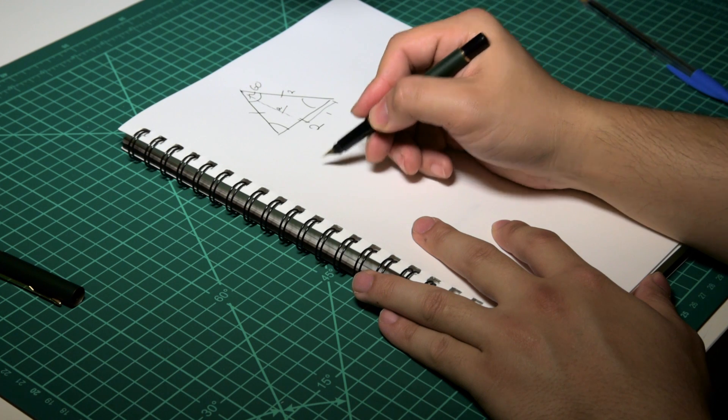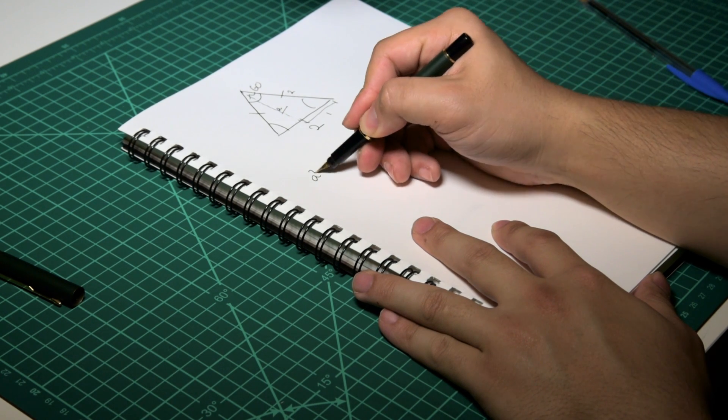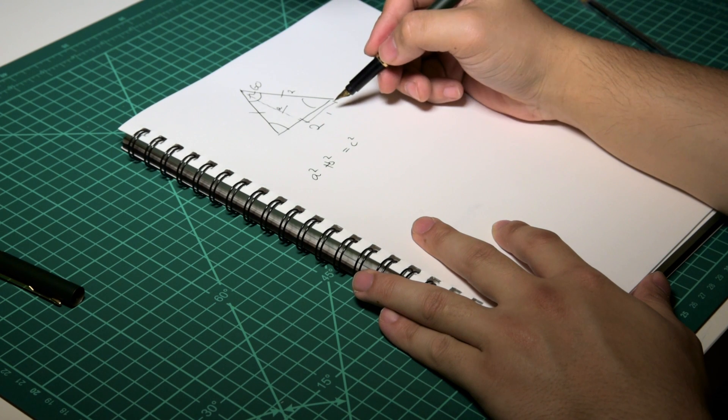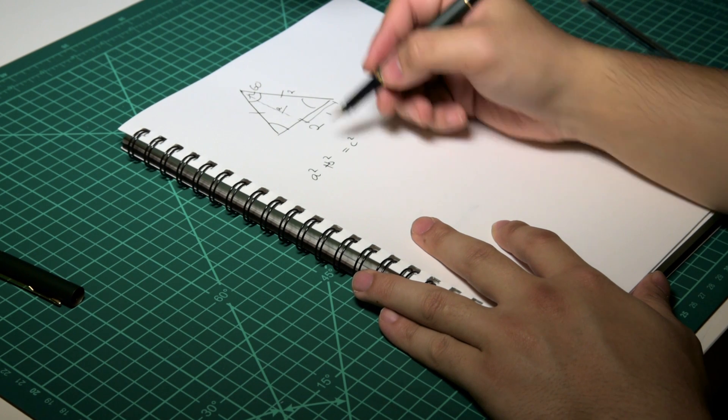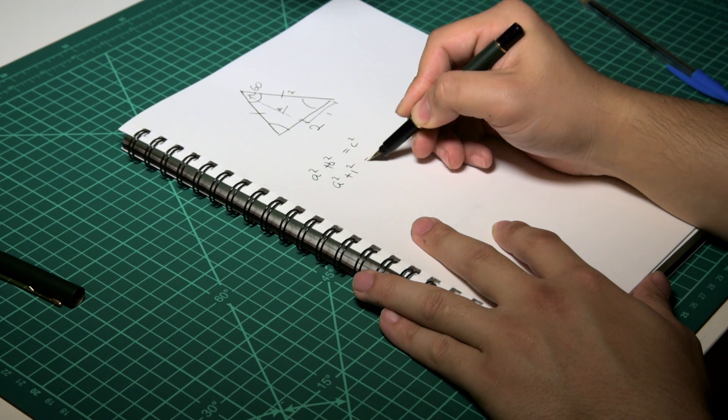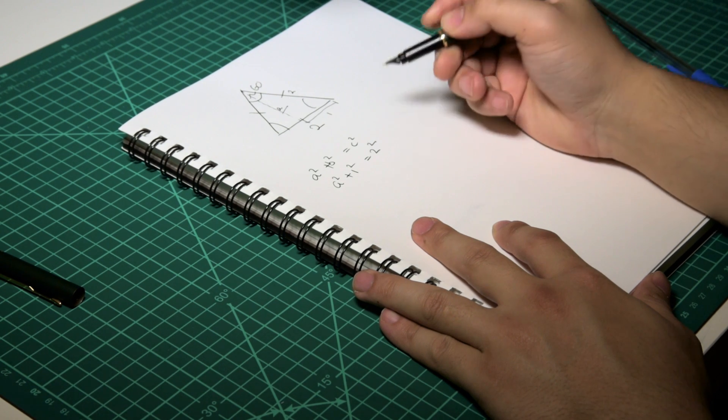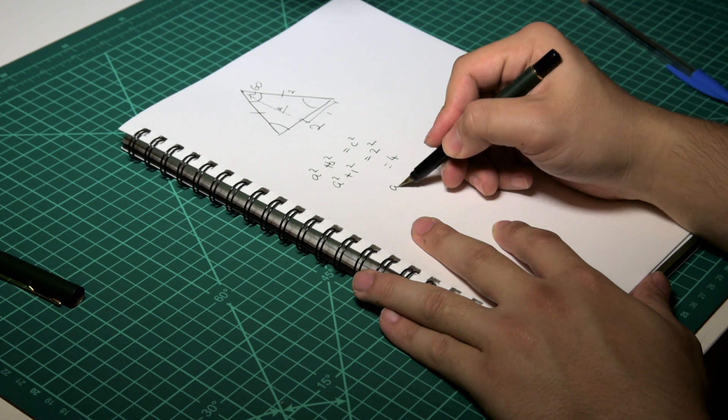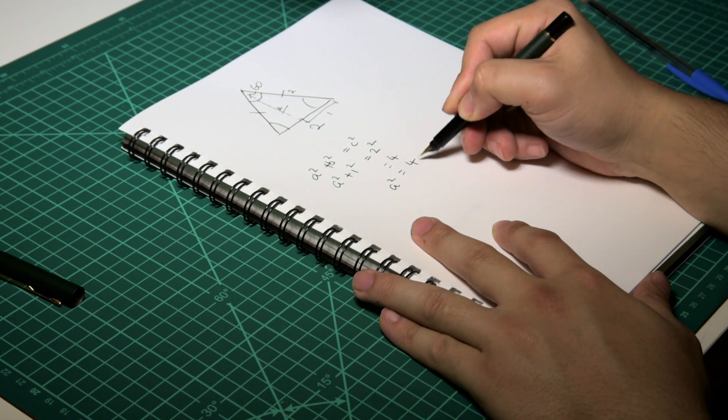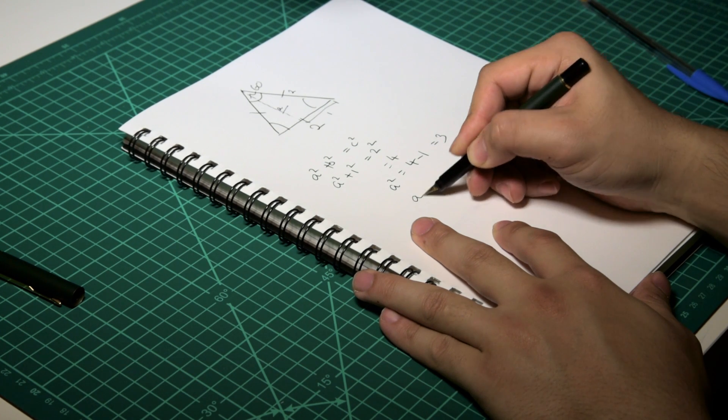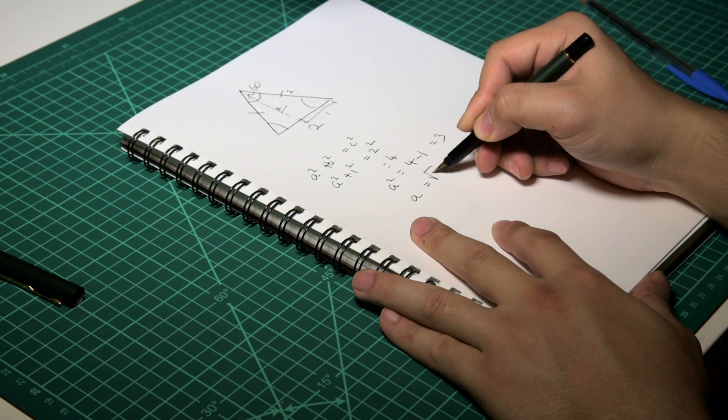To work out what A is we can use Pythagoras's theorem. A squared plus B squared is equal to C squared. So applying this it becomes A squared plus 1 squared is equal to 2 squared is equal to 4. We'll bring the 1 over to the other side, becomes 4 minus 1 is equal to 3. A is equal to square root of 3.